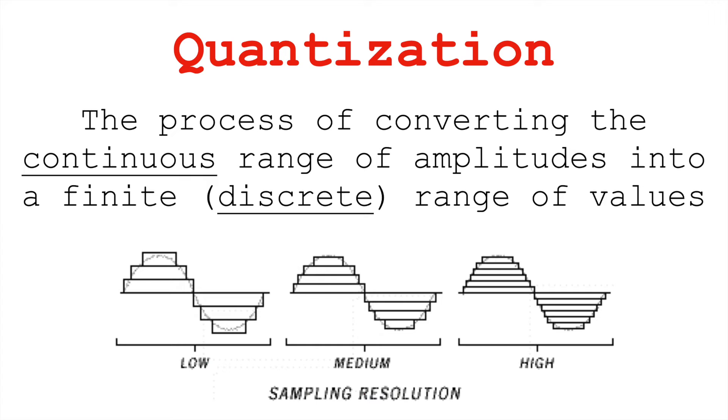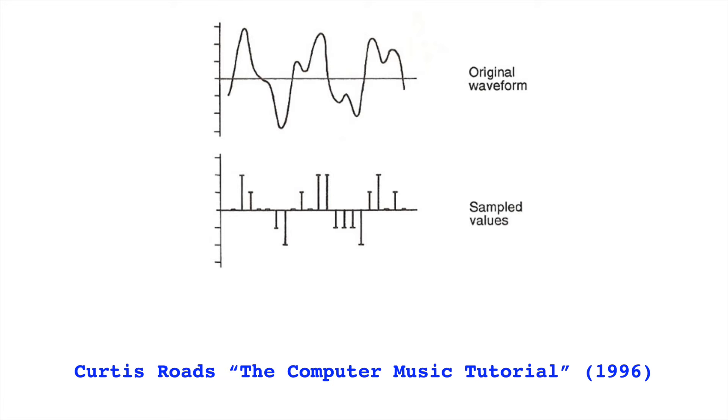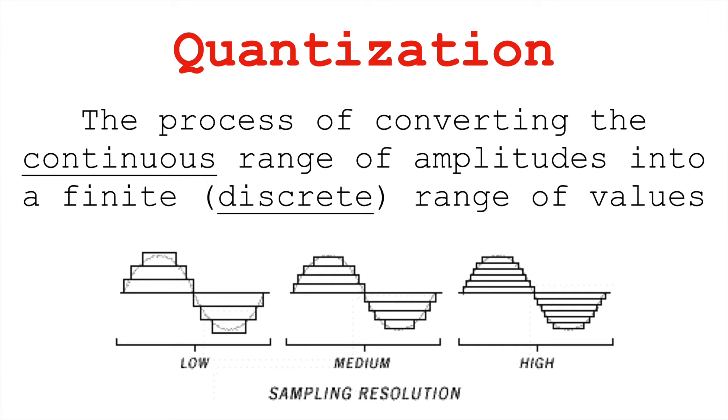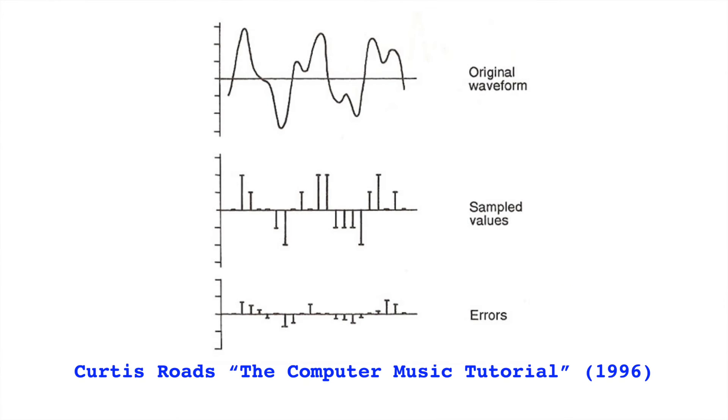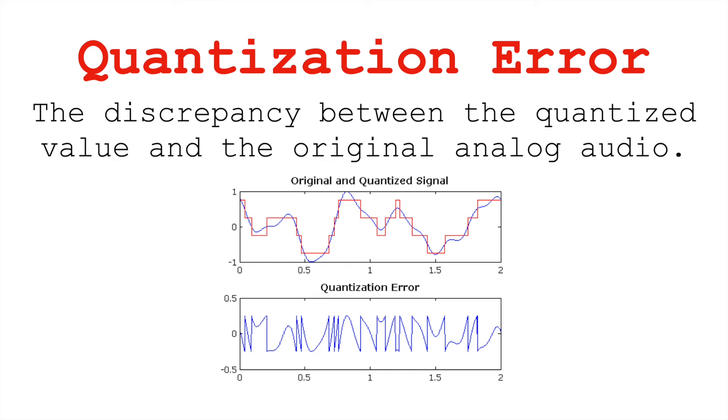Quantization is the process of converting the continuous range of amplitudes voltages into a finite range of discrete values. No matter how high a resolution you use, there's always going to be some rounding. But the rounding will be lower the higher the resolution. This is why our signal-to-error ratio gets higher the number of bits we use to represent amplitudes. More bits, more possible amplitudes, higher dynamic range. Because of this rounding, though, we're going to get a discrepancy between the quantized value and the original analog audio. And this is called quantization error.